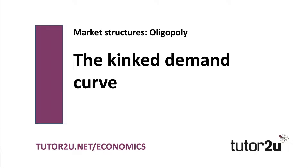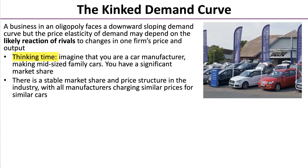Welcome back to this online lesson on oligopoly. In this session we're going to explore a model called the kinked demand curve, which is a way of explaining behaviour in an oligopolistic market. A business in an oligopoly faces a downward sloping demand curve, but the price elasticity of demand may depend on the likely reaction of rivals to a change in one firm's price and output.